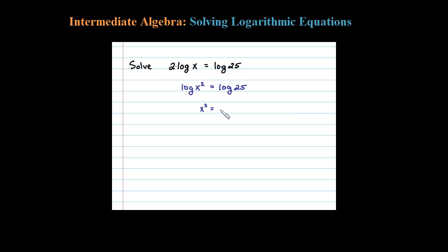So x squared has to equal 25. If I extract the root and take the square root of both sides, don't forget the plus or minus. We can get the two solutions: x equals plus or minus 5.